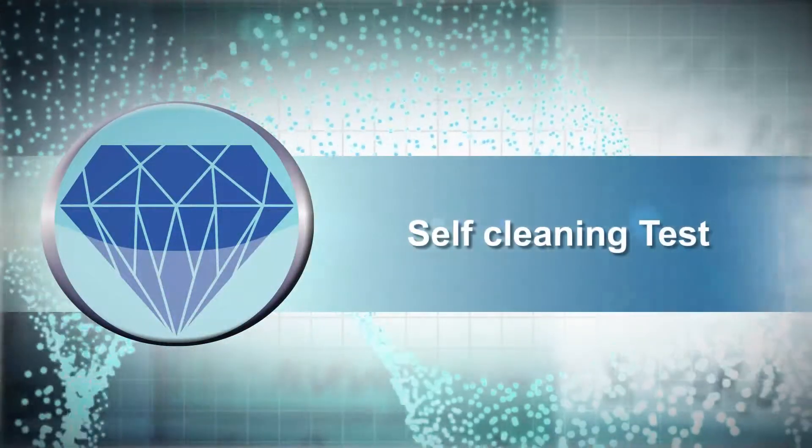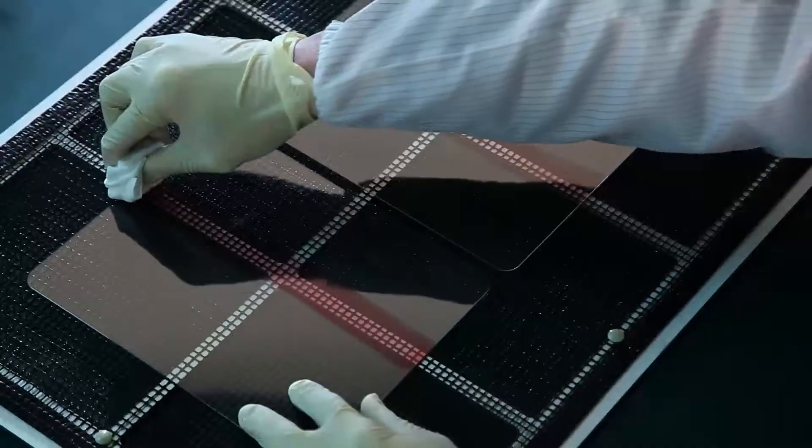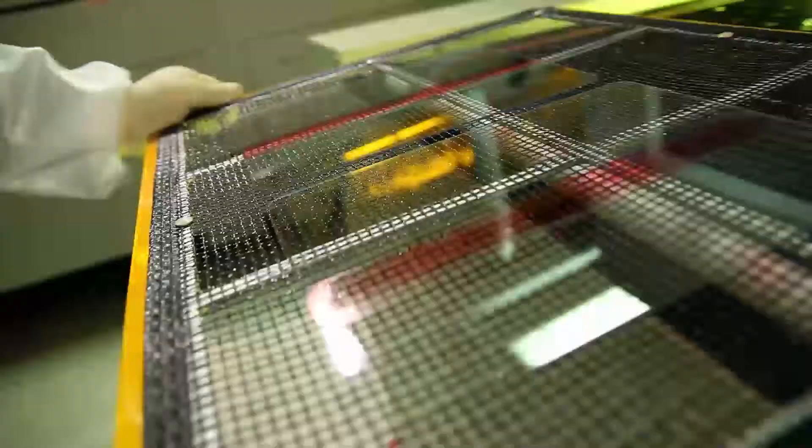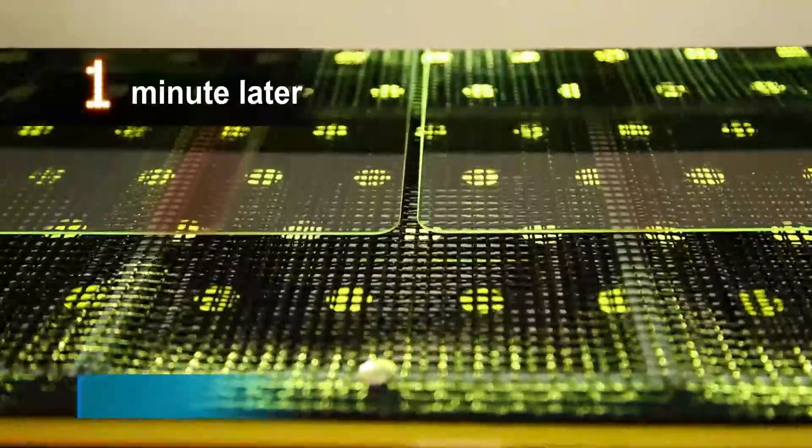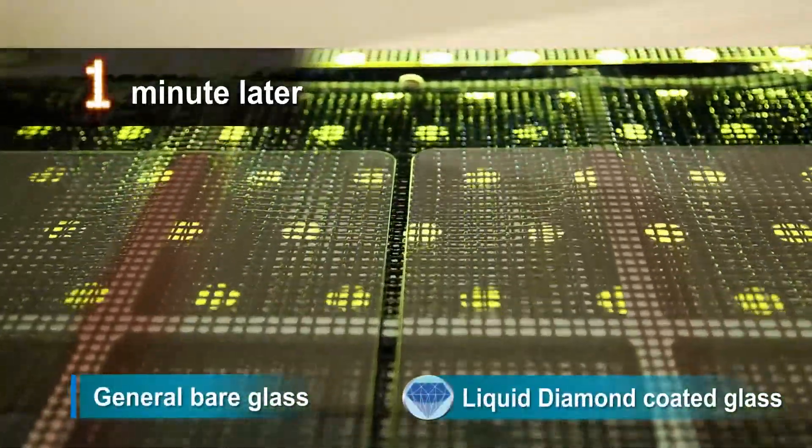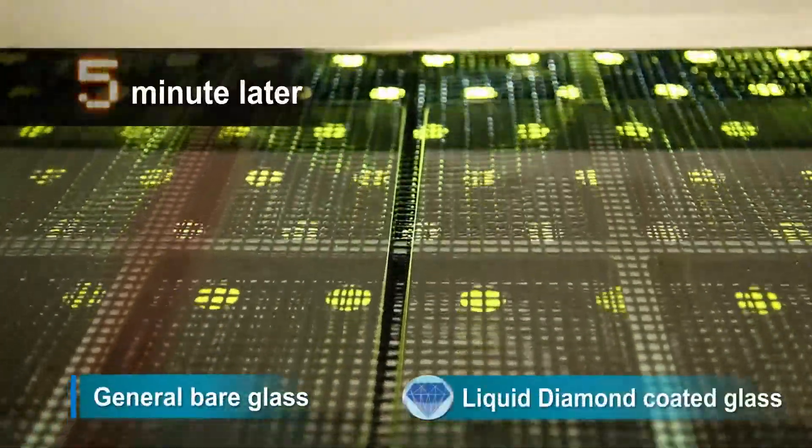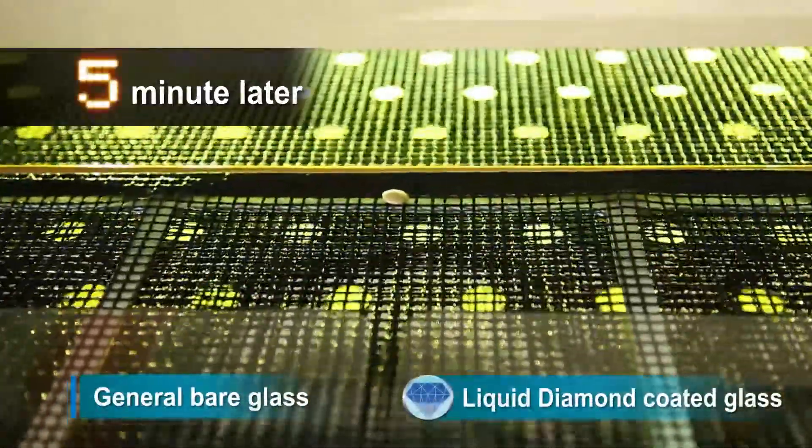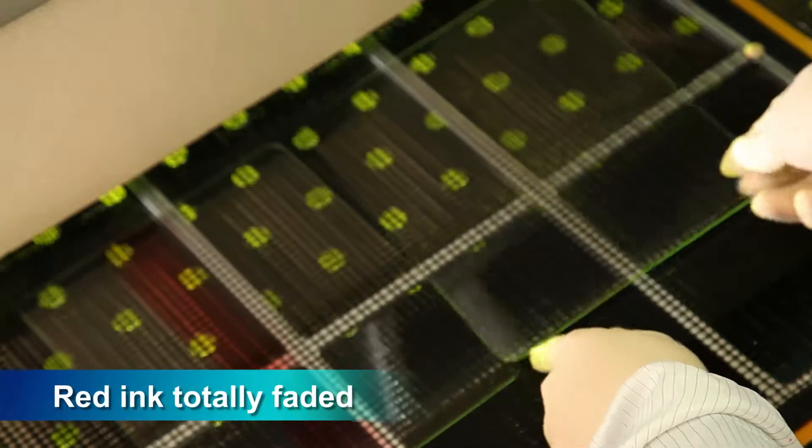Self-cleaning test: Evenly apply red ink onto both sides of the glass plate under UV light. One minute later, the red color of the right side is clearly fading. Five minutes later, the red color on the Liquid Diamond right side has gone, but the left side remains as it used to be.